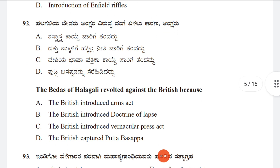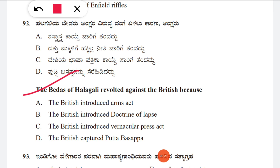Question 92: The Betas of Halagali revolted against the British because — option A: the British introduced the Arms Act, B: the British introduced the Doctrine of Lapse, C: the British introduced the Vernacular Press Act, D: the British captured Puttabasappa. The correct answer is A, the British introduced the Arms Act.